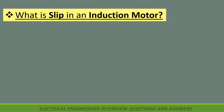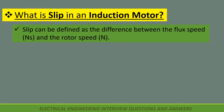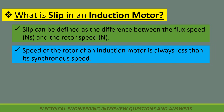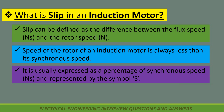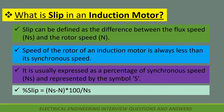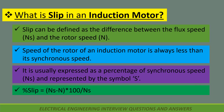What is slip in an induction motor? Slip can be defined as the difference between the flux speed and the rotor speed. Speed of the rotor is always less than its synchronous speed. It is expressed as a percentage of synchronous speed. Percentage slip = (NS - N) / NS × 100.